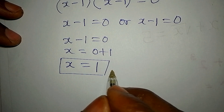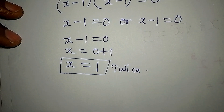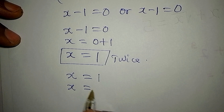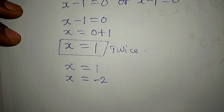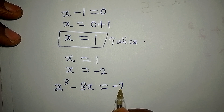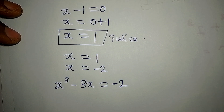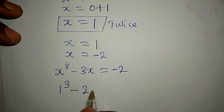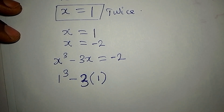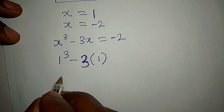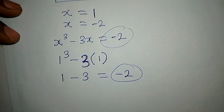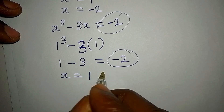The two solutions are x equals 1 and x equals negative 2. Let's verify x equals 1 in the original equation x cubed minus 3x equals negative 2. Substituting: 1 to the power of 3 minus 3 times 1 equals 1 minus 3 equals negative 2, which matches the right-hand side. So x equals 1 is confirmed.